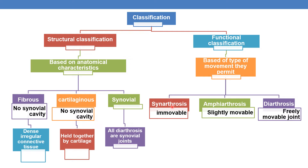Synarthrosis means immovable joints. Amphiarthrosis means slightly movable joints. Whereas diarthrosis means freely movable joints. All diarthroses are synovial joints.